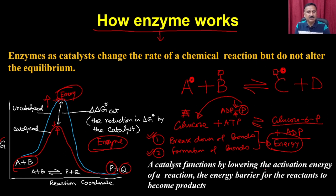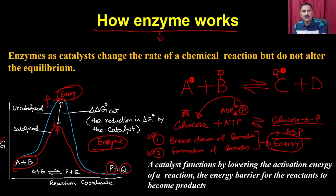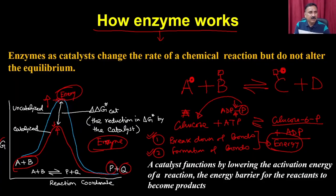So what enzymes are doing is they are lowering the activation energy. This difference of energy is called the activation energy. What enzymes are doing is reducing the activation energy, and once they reduce the activation energy, A and B are spontaneously getting converted to P and Q. The enzyme itself provides them a suitable environment - it helps the substrate to break the bond as well as to form the bonds. This is the way the enzyme actually works.